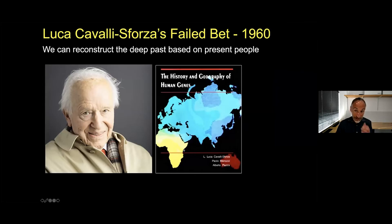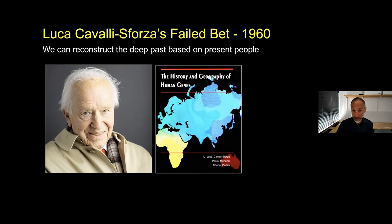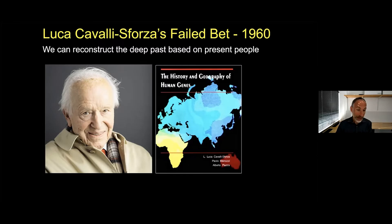In 1960 — now about 60 years ago — Luca Cavalli-Sforza really started this field of using whole genome data to look at the past. He made a bet that it would be possible to reconstruct the migrations of people around the world from variation in the ancestry of people who live today — who's most closely related to each other. The idea was that at some level, people would remain in the same place, and therefore by seeing how closely related people are today, you might be able to make inferences about how people got to where they are.